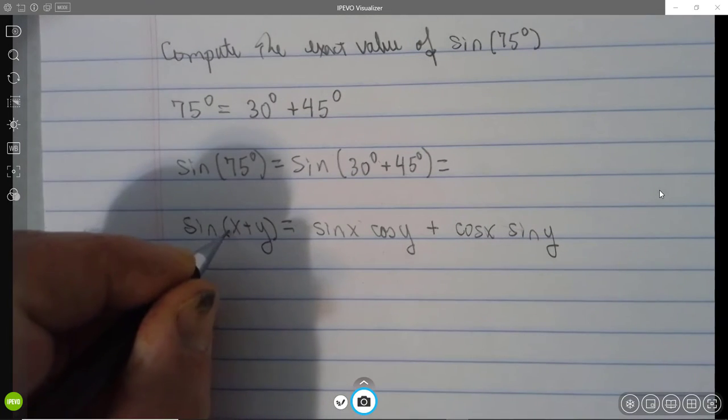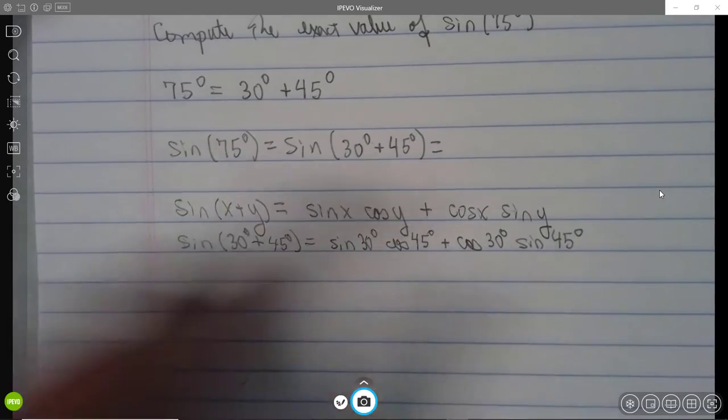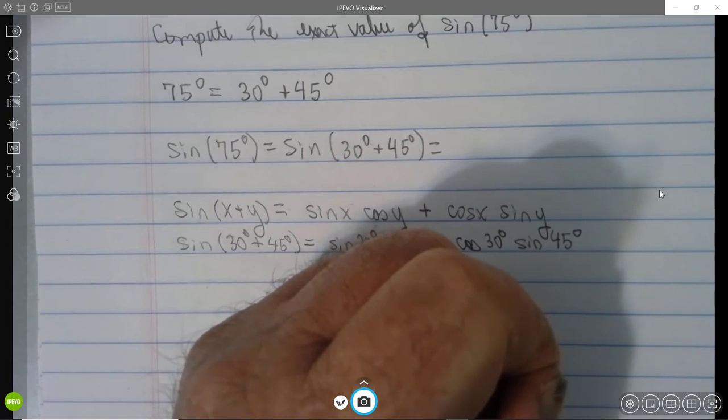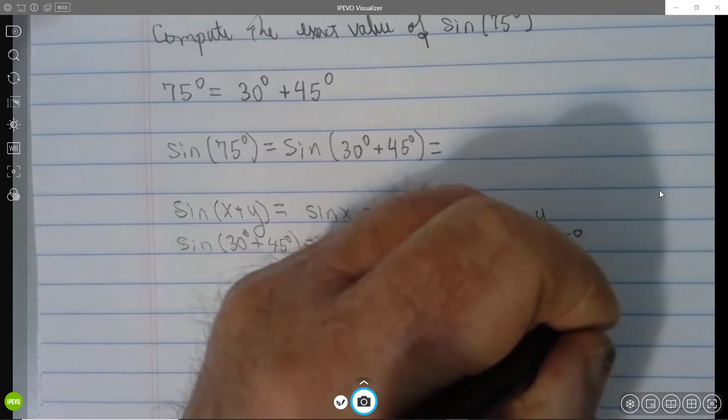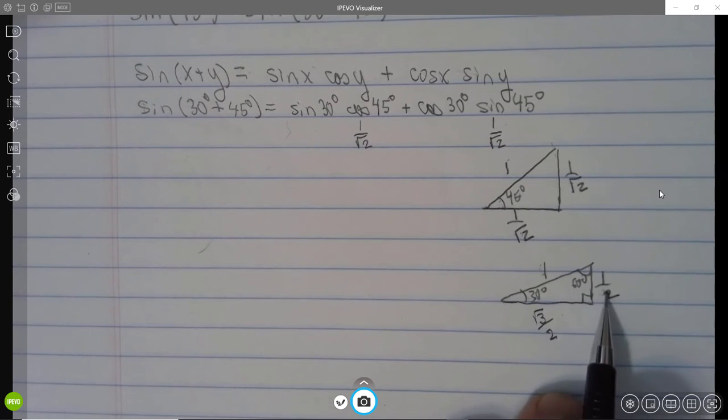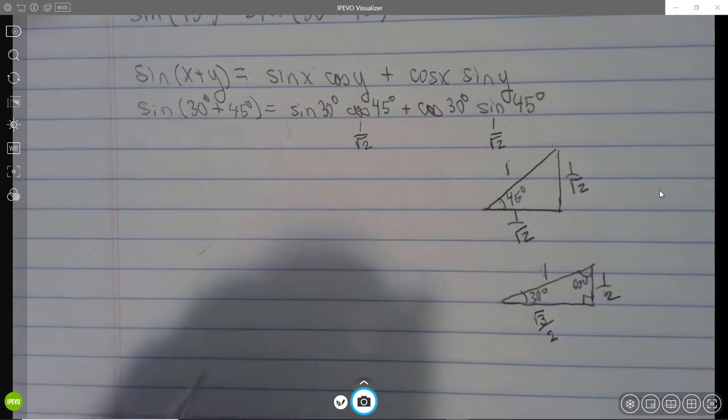So I'm going to set x equal to 30 degrees. Hopefully you've kind of got these memorized by now, but if you are a little bit rusty. So the sine of 30 degrees is 1 half and the cosine of 30 degrees is root 3 over 2.